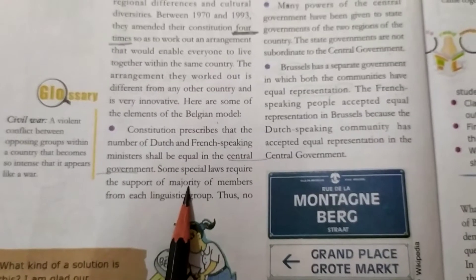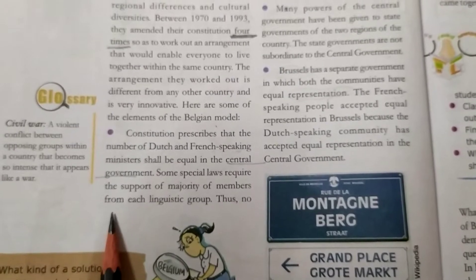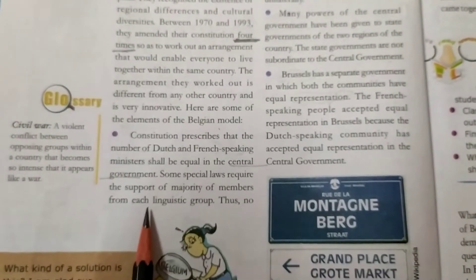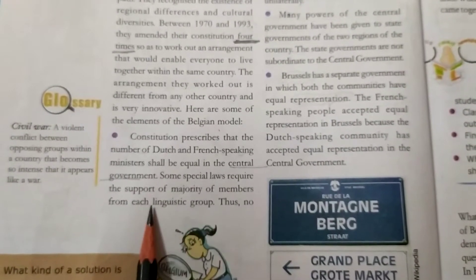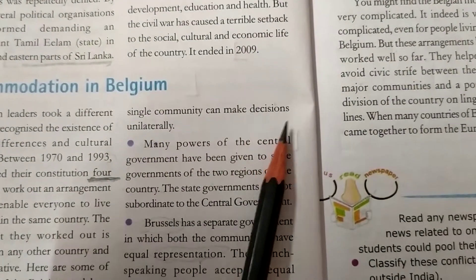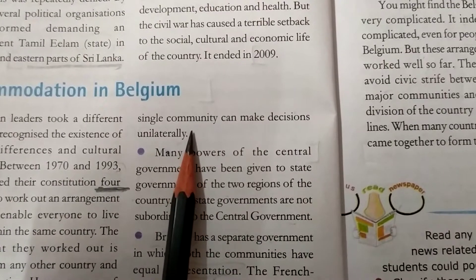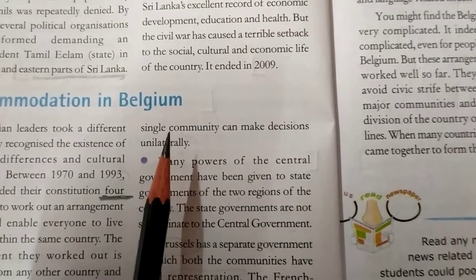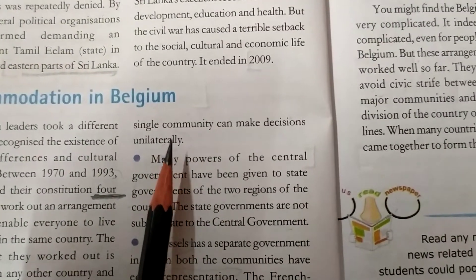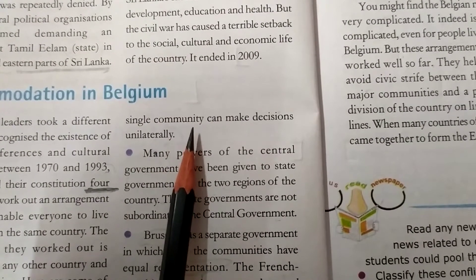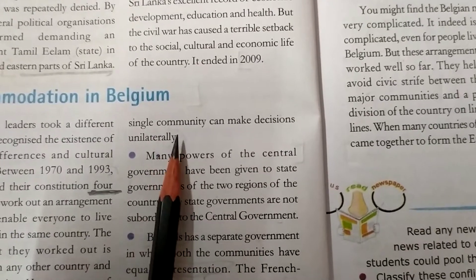Some special laws require the support of a majority of members from each linguistic group — that is, the Dutch and French speaking. Thus, no single community can make decisions unilaterally. Dutch cannot individually make any decision; Dutch requires French support. Both communities' votes matter in order to decide any issue.